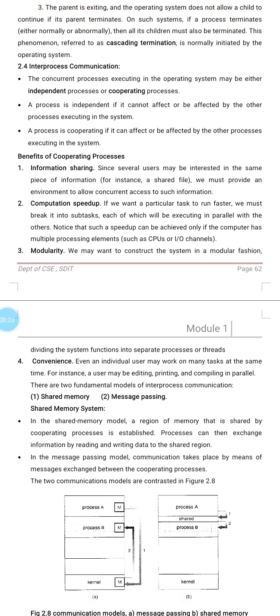These concurrently executing processes can be either independent or cooperating. Independent processes are those processes which cannot affect or cannot be affected by other processes executing in the system. For example, if you have process P1 and P2, and you make some modification to P1, if that modification cannot affect other processes in the system, such a process is called an independent process.